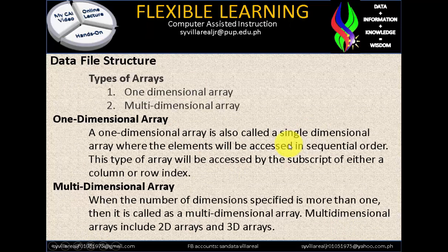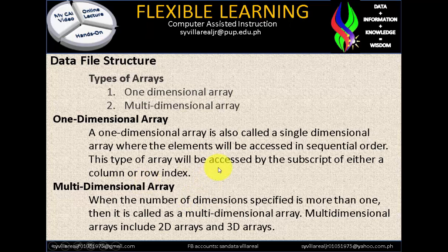Now let's move to the types of arrays. We have one-dimensional array and multi-dimensional array. Two-dimensional is also multi-dimensional and is very common, while three dimensions and more are not common in programming. A one-dimensional array, also called a single-dimensional array, has elements accessed in sequential order by the subscript of either a column or row index. When the number of dimensions specified is more than one, it is called a multi-dimensional array, which includes 2D and 3D arrays.